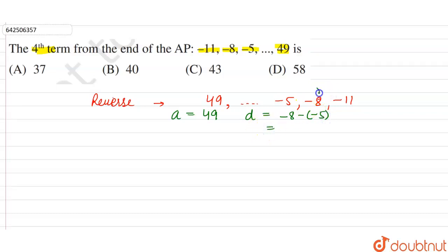We are subtracting -5 from -8, so this is equal to -8 minus -5, which is -8 plus 5, so this is equal to -3.